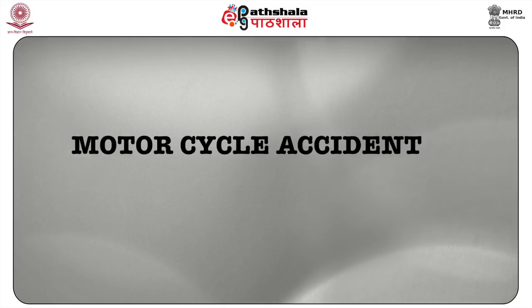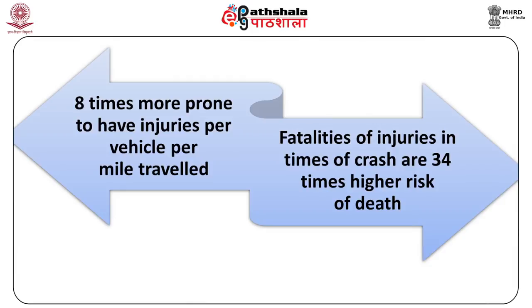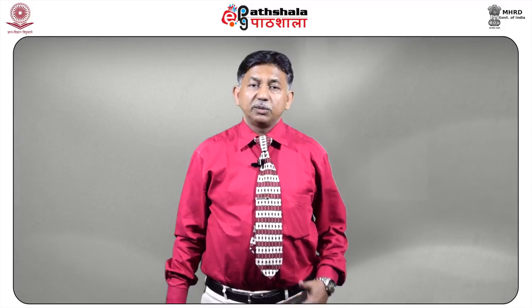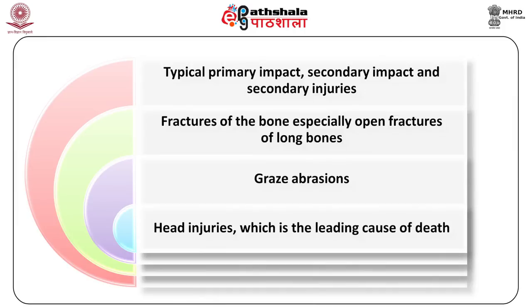Motorcycle accidents: motorcycle riders are 8 times more prone to injuries per vehicle per mile travelled, and the fatality rate in crashes is 34 times higher than other vehicles. In single vehicle accidents, the motorcycle may slide, overturn, and pin the rider, or the rider may be ejected or catapulted out. Injuries include all three types — primary impact, secondary impact, and secondary injuries — as well as fracture of bones especially open fractures of long bones, graze abrasions, and head injuries, which are the leading cause of death especially when the person has not worn a helmet. Ring fractures are commonly seen due to impact of the crown of the head upon the vertebral column.